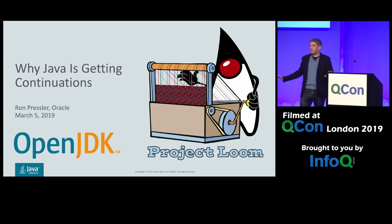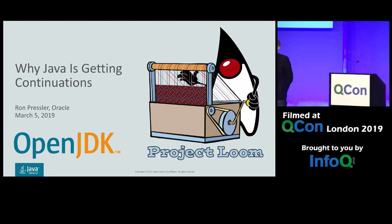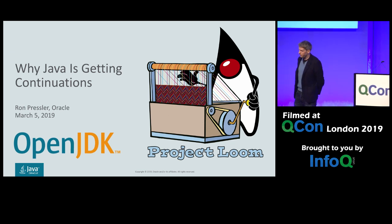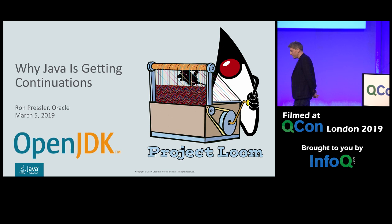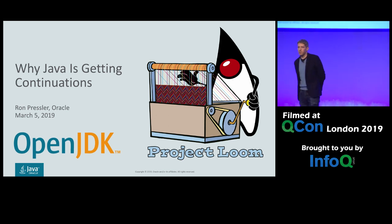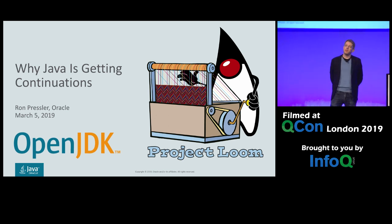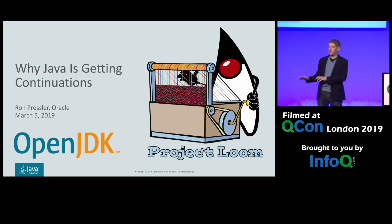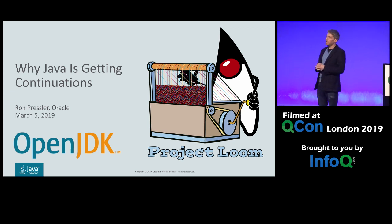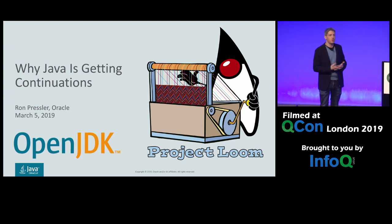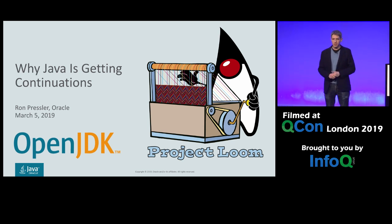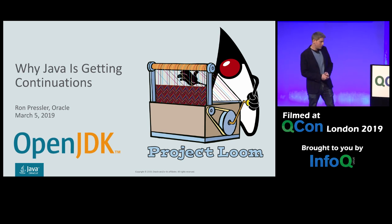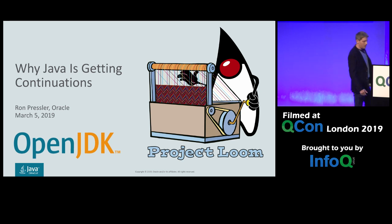This talk is not part of the Java track — it's part of the programming languages track, so I've been asked to make it more theoretical. We're going to start with quite a bit of theory, with things getting more concrete later on. This gives me an opportunity to focus on aspects of the project I don't normally get to talk about. If you're more interested in the down-to-earth aspects, you can search for other Loom talks on YouTube.